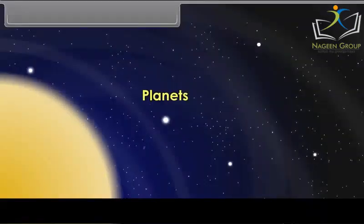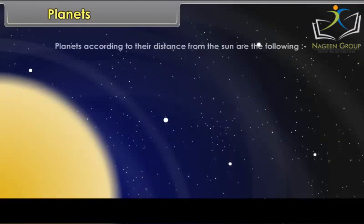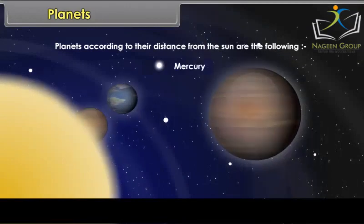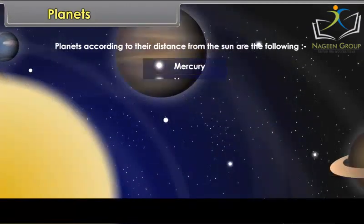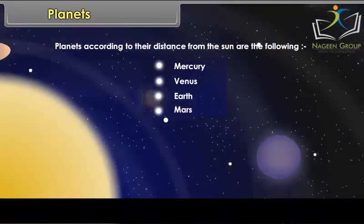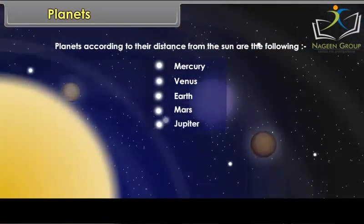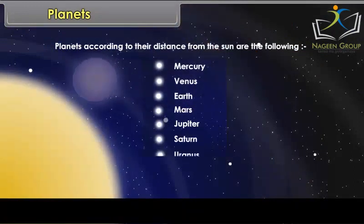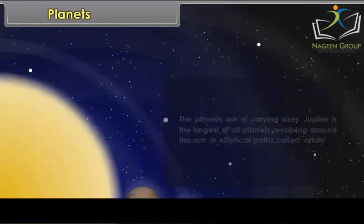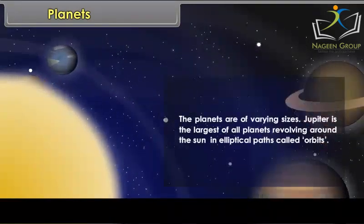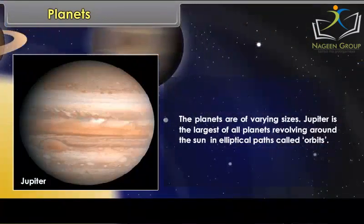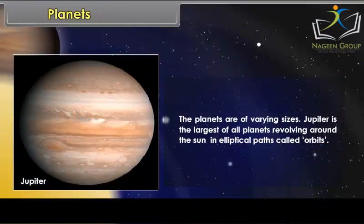Planets — according to their distance from the Sun. The planets are of varying sizes. Jupiter is the largest of all planets. All planets revolve around the Sun in elliptical paths called orbits.